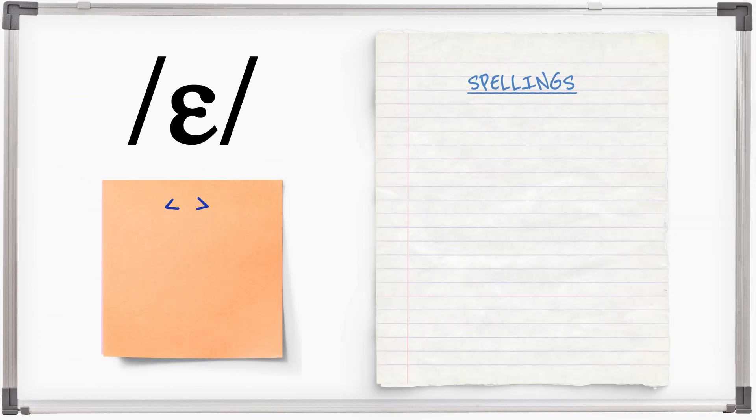E is normally spelt with one e: bed, went, get, shall.